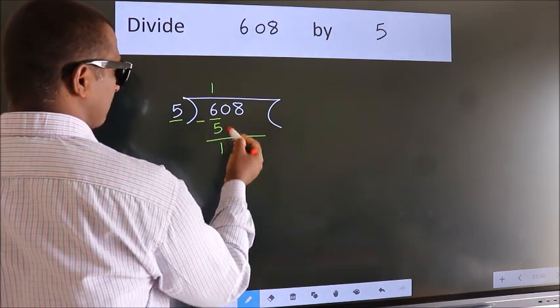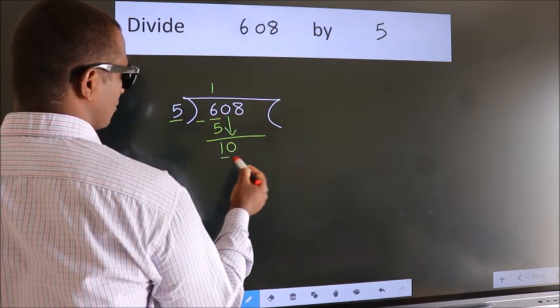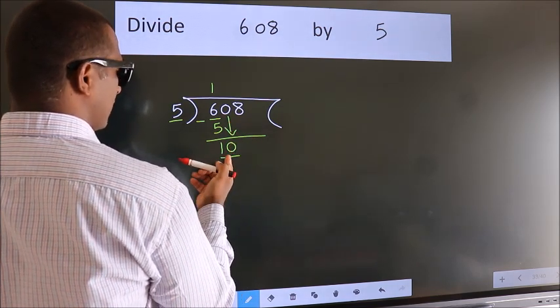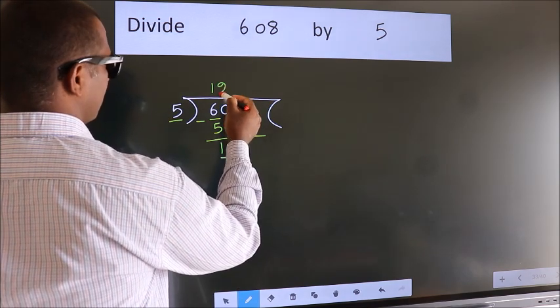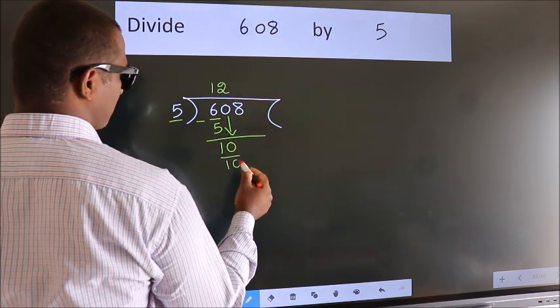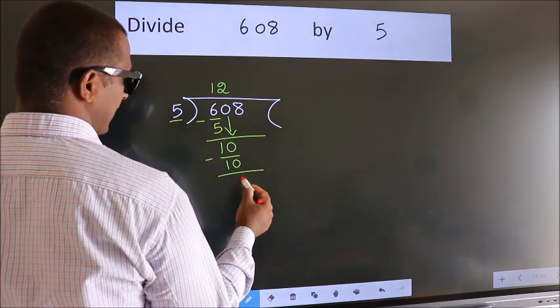After this, bring down the beside number. 0 down, so 10. When do we get 10 in the 5 table? 5 twos, 10. Now we subtract. We get 0.